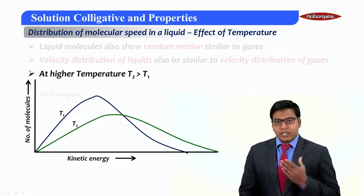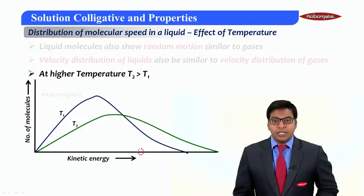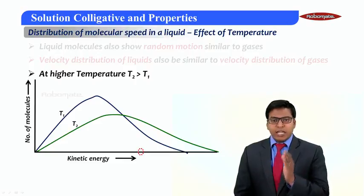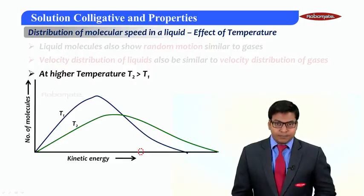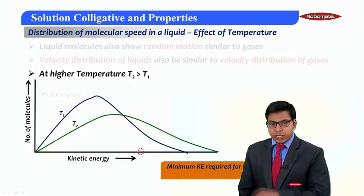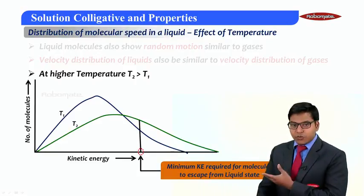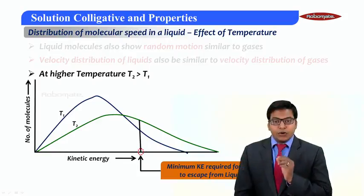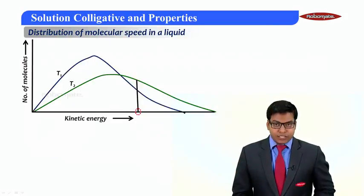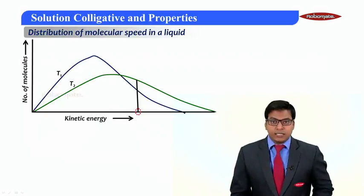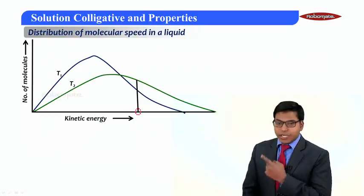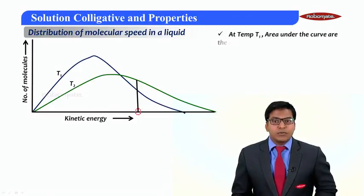Let us take a point or kinetic energy after which liquid particles are starting to escape. This is the minimum kinetic energy required for molecules to escape from the liquid state. If this minimum kinetic energy line is drawn towards those curves, they will start touching at two different points and generate an area under the curve. Let us see what exactly it represents.